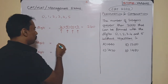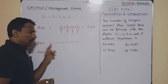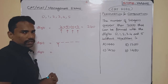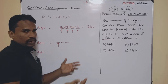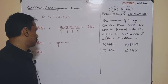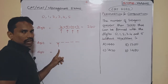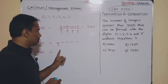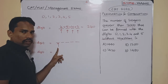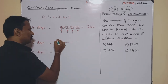For five-digit numbers: put five slots. Any five-digit number is automatically greater than 2000, so the only condition is that the first digit must be non-zero. There are 5 non-zero digits available, so the first slot can be filled in 5 ways.